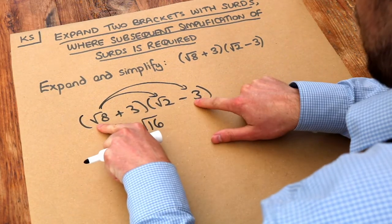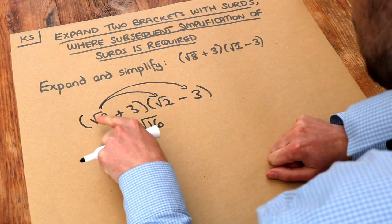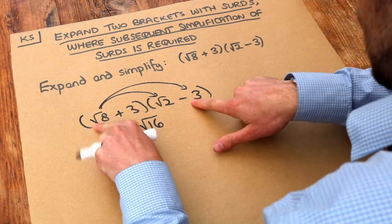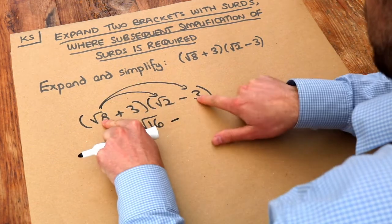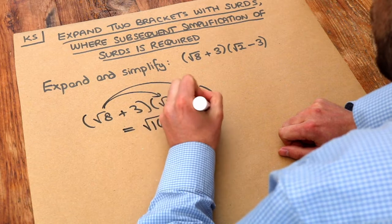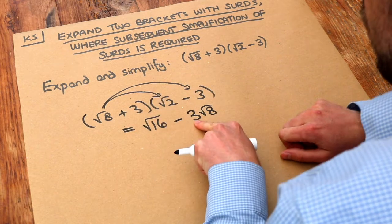And we've got the root 8 times the negative 3. I do the sign first. Positive times negative is negative. And root 8 times 3 is 3 root 8. We always put the non-surds first, the thing without the square root over it.